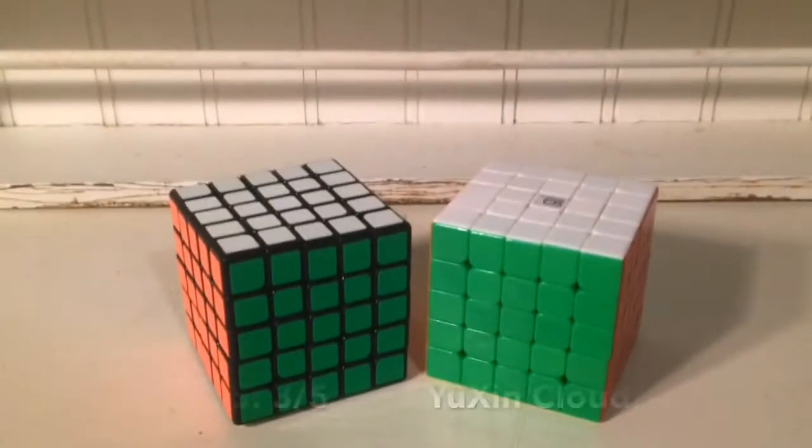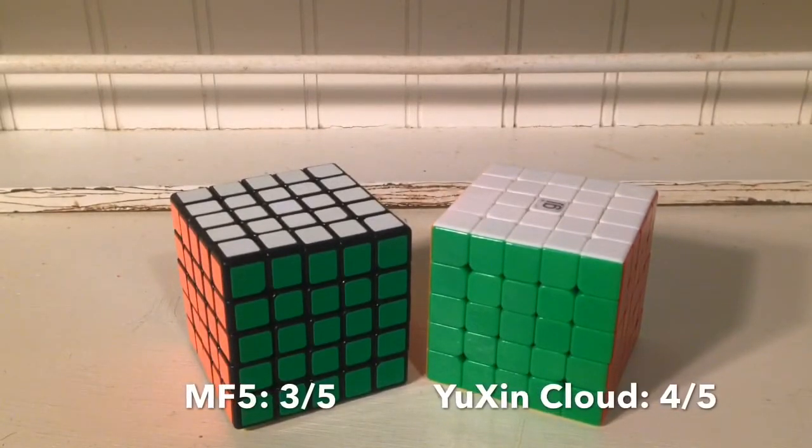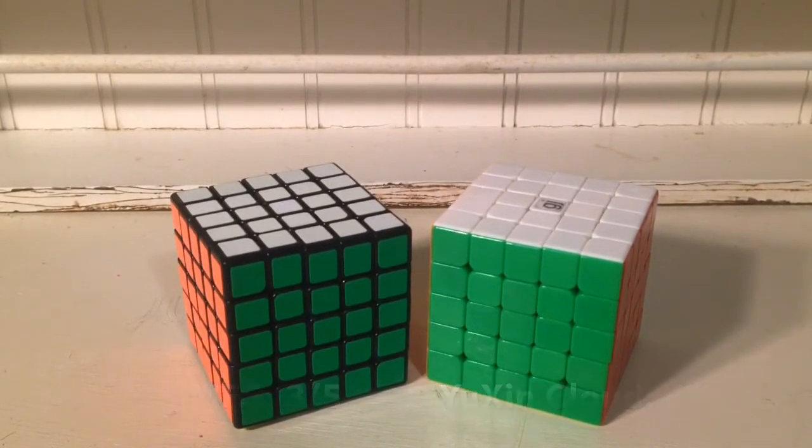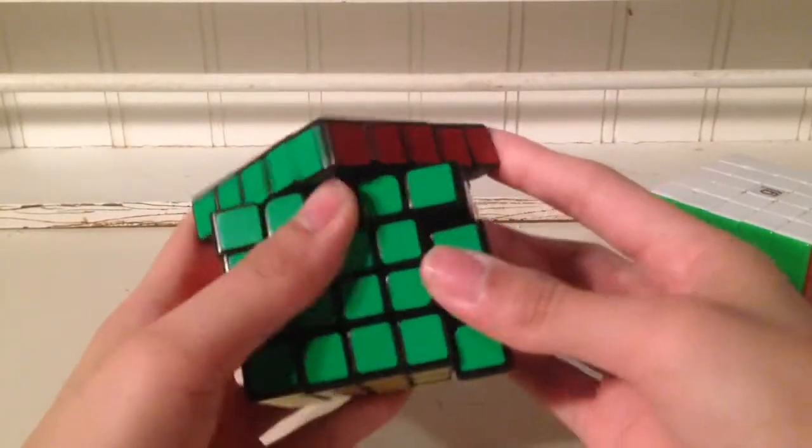For the corner cutting category, I'd give the MF5 a 3 out of 5, and the YuXin Cloud a 4 out of 5. Time for design flaws.